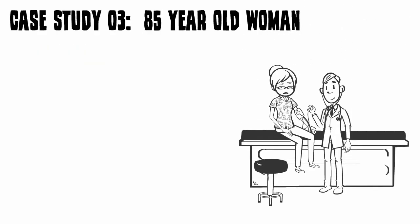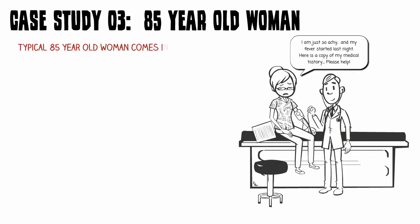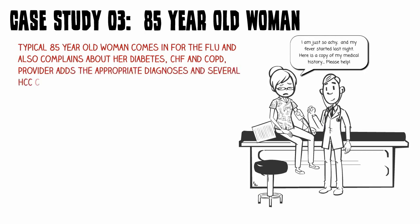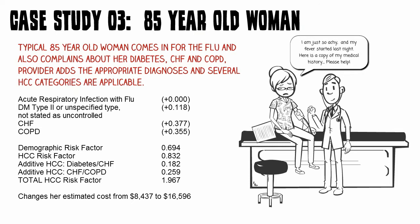Let's do one more. A typical 85-year-old woman comes in for the flu, complains of diabetes and respiratory problems related to CHF and COPD, and the provider codes the appropriate ICD-10 codes. Her demographic risk score is 0.694. The HCC risk factor for diabetes, CHF, and COPD adds up to 0.832. But please note she also gets the two additive HCCs — both diabetes/CHF and CHF/COPD. In total, her HCC risk factor is 1.967, which changes her estimated cost to over $16,500.